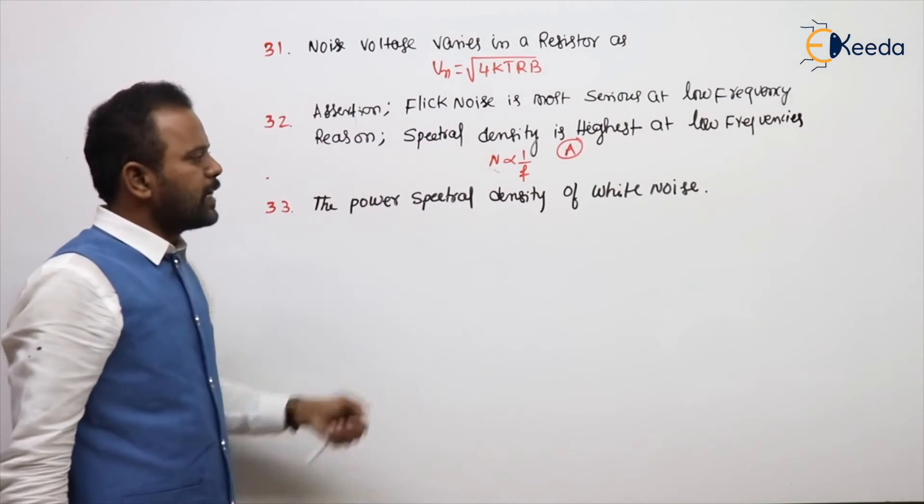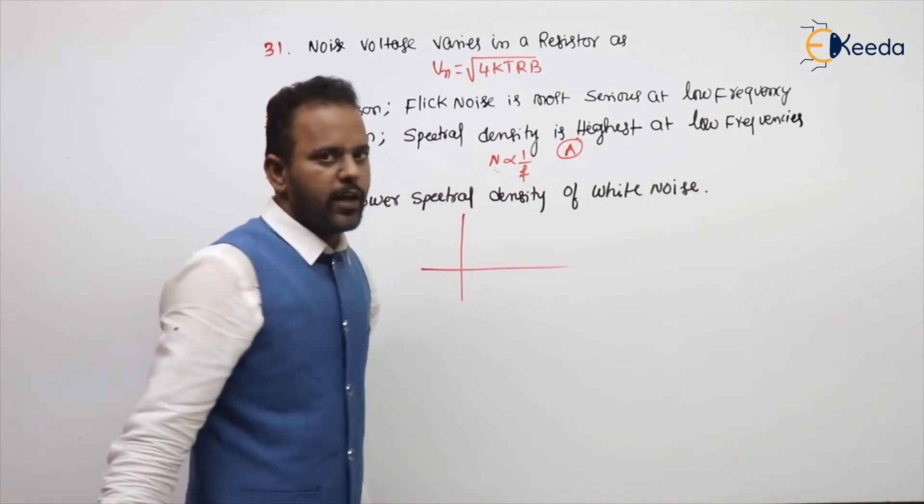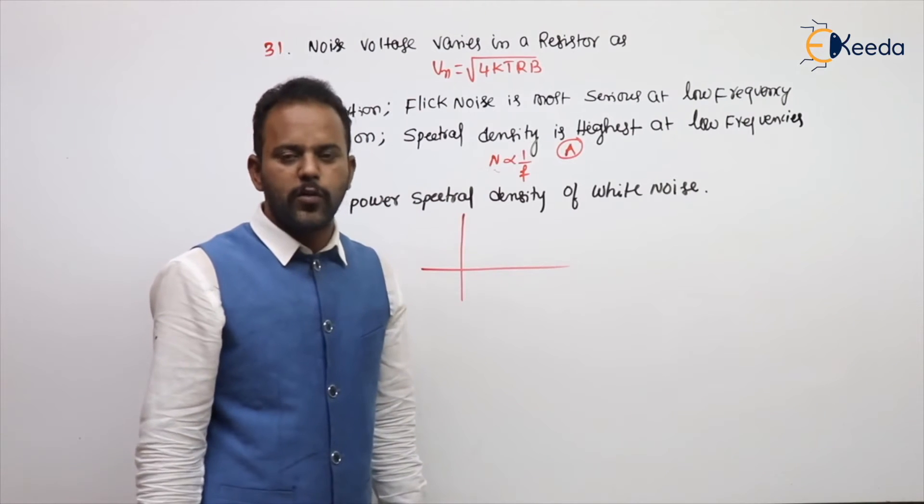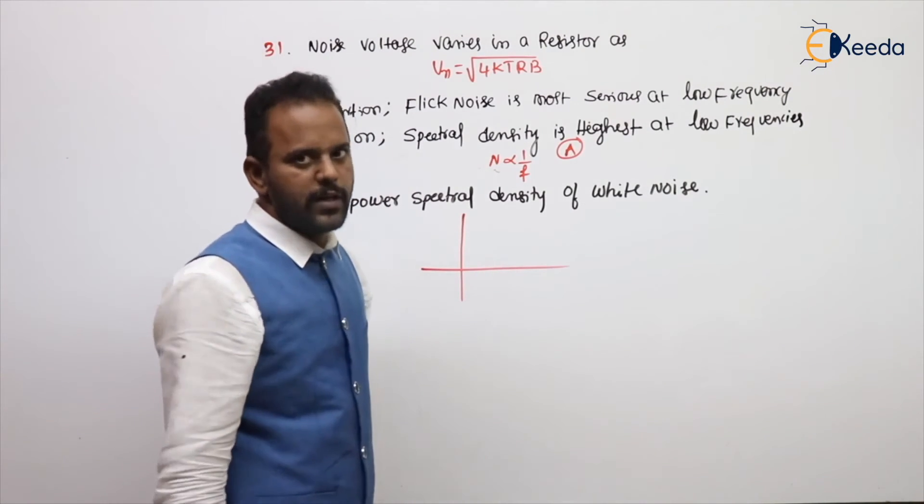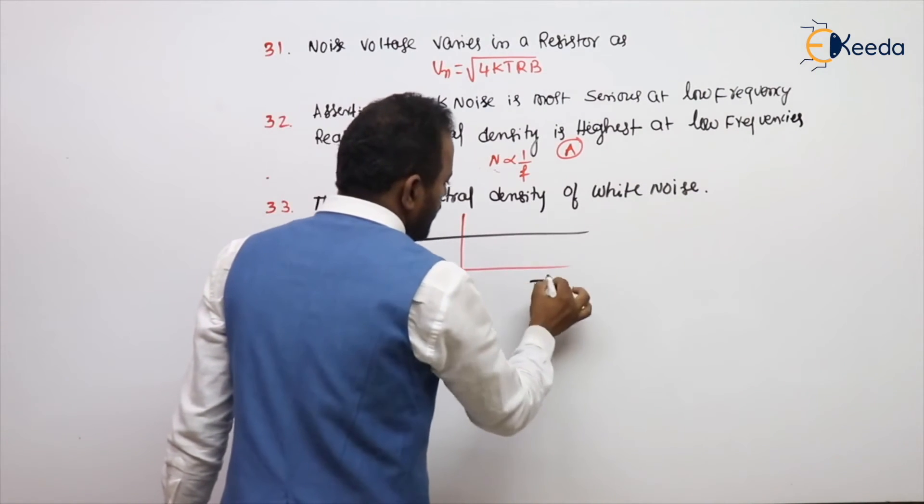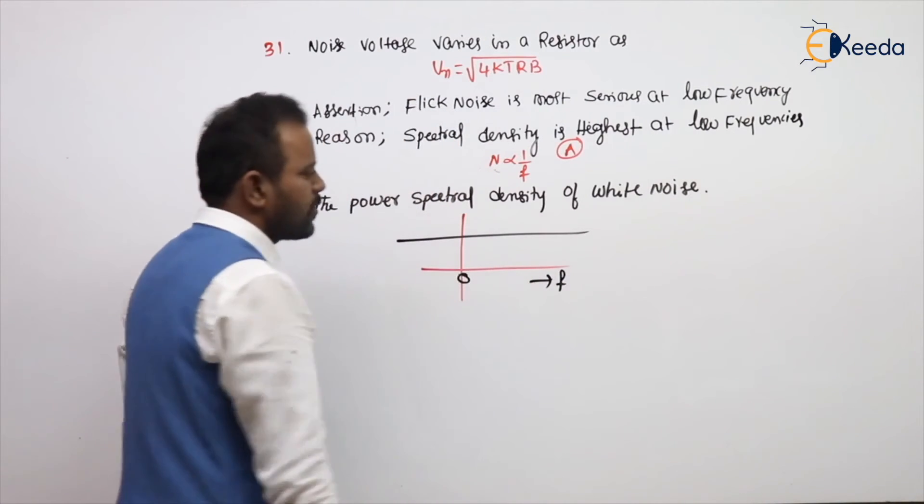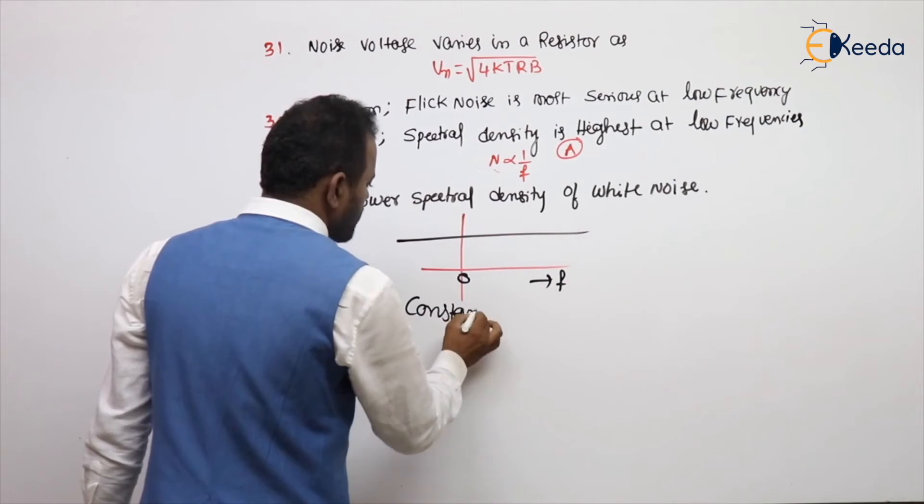The power spectral density of white noise - the options are square root of frequency, inversely proportional to frequency, one third of frequency, or constant. What is the power spectral density of white noise, whether for one side or two side? It is a constant versus frequency.